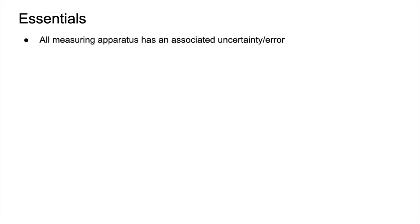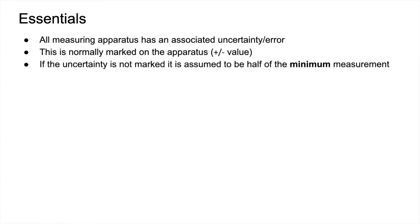All measuring apparatus has an associated uncertainty or error. That's normally marked on the apparatus with a plus or minus value. If it's not marked on, then we assume it to be half of the minimum measurement.